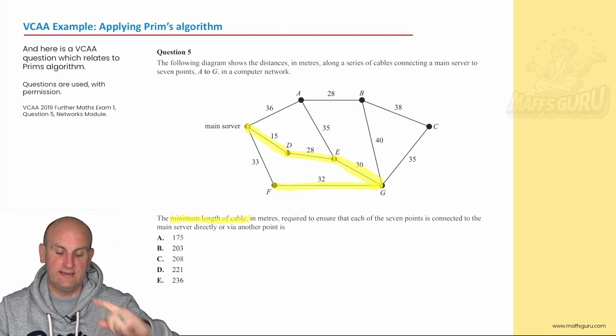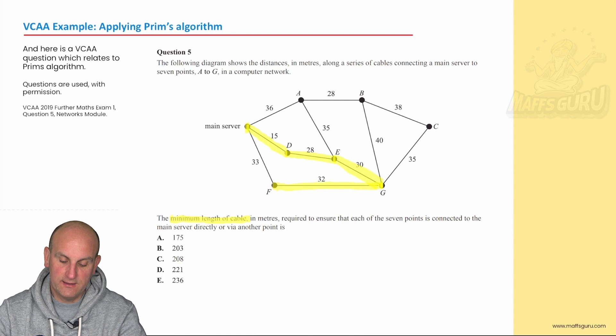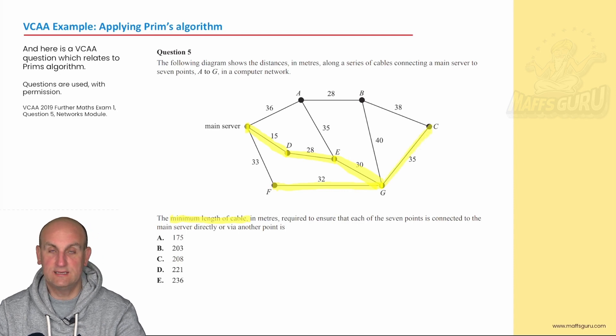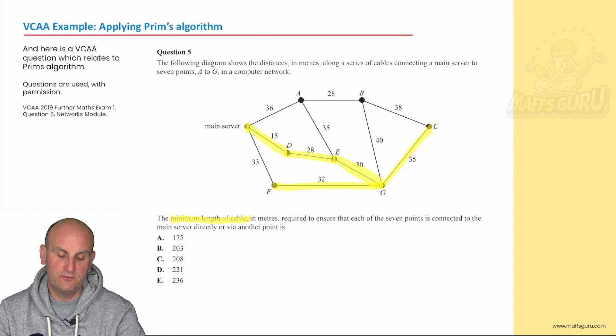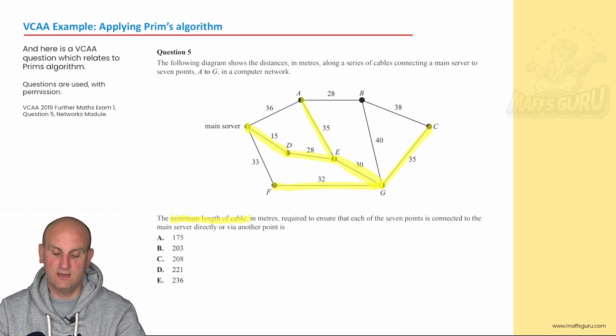Now, I cannot connect F to my main server because that will create a cycle. So I'm going to ignore that one from now on. I'm just going to look at A, E, and G. So I've got a 36, 35, 40, and a 35 coming off. Oh, I've got two 35s. Which one do I choose? Actually, it doesn't really matter. I'm going to choose that, a 35 there, and I'm going to keep going. I've now got the connection between C and B in play. So what have I got? I've got a 36 coming off between the main server and A, 35 between A and A, a 40 between G and B, and a 38. Well, again, I think 35 is my smallest. So I'm going to connect my 35.